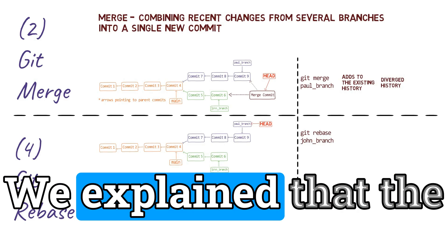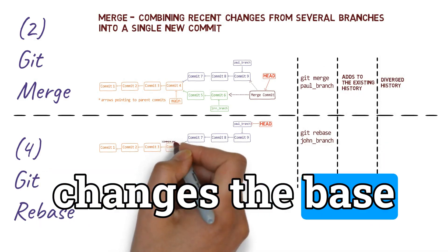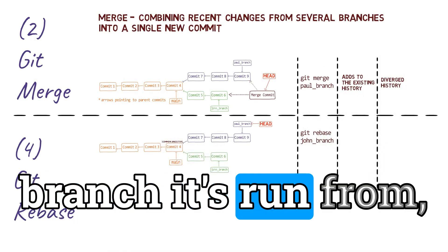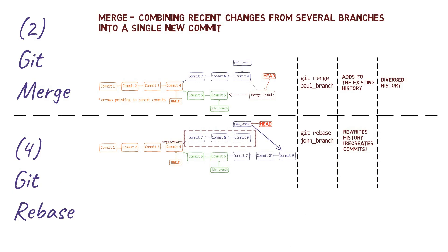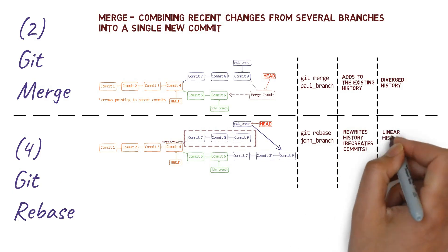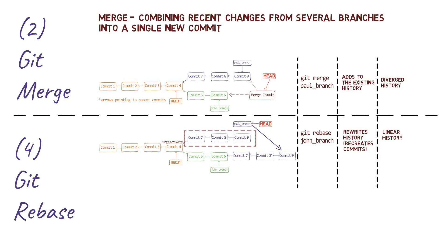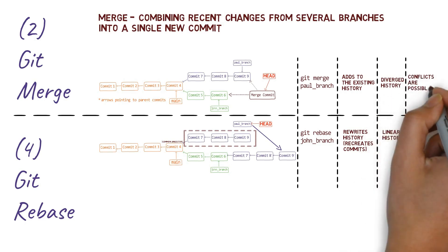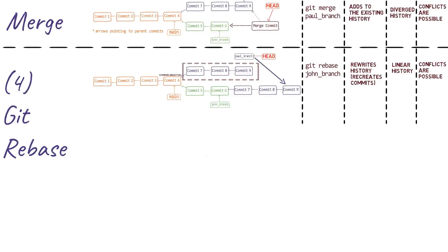We explained that the command is called rebase because it changes the base commit of the branch it's run from, or the commit history it's run from. When using git rebase, we're asking it to give our branch another base — that is, pretend as if it had been born from a different commit and replay the changes introduced in these commits on the new base.